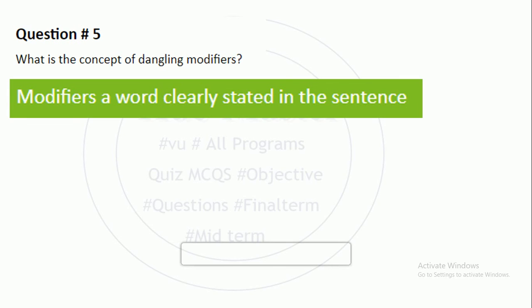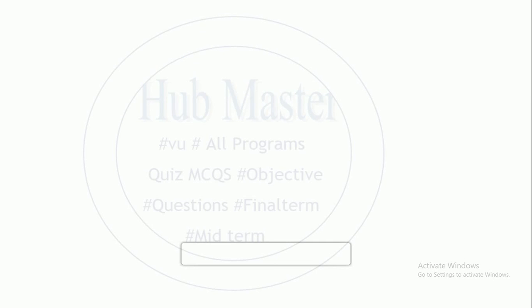What is the concept of dangling modifiers? Modifiers are a word clearly stated in the sentence. When we explain a word that is dangling, it is called a dangling modifier.